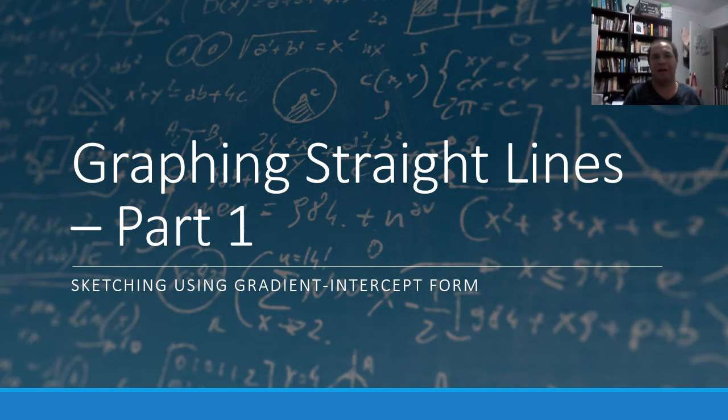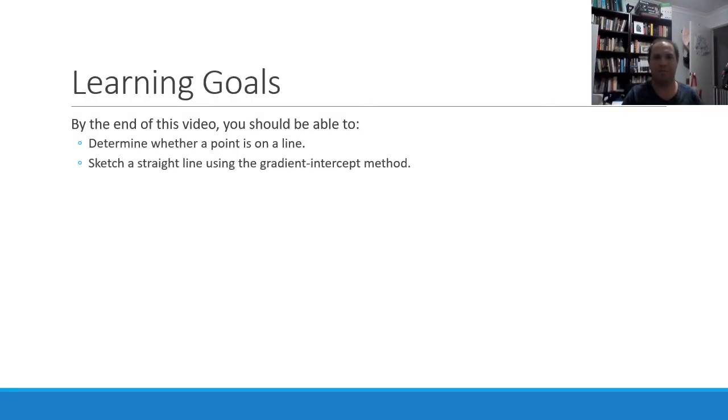Hi students, in this video we're going to look at how to graph straight lines using the gradient intercept form. By the end of this video you should be able to determine whether or not a point is on a line and also sketch a straight line using the gradient intercept method.